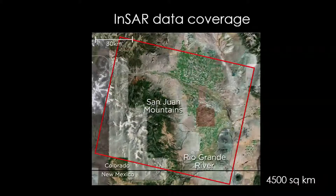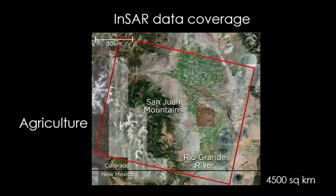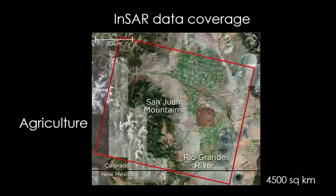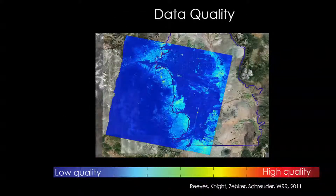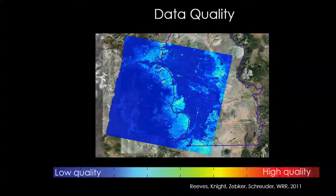So we immediately wanted to use INSAR in the San Luis Valley. This is the data coverage we had — good coverage over the San Luis Valley. But we had a challenge, and this is the reason people haven't previously used this technology in agricultural areas. The challenge was the crops that were growing. Here we are trying to detect this subtle change in deformation, and you have crops growing. Well, this was the topic of Jessica Reeve's PhD thesis, and this was one of the first images she had. This is data quality — blue is bad. This is not a great way to start your PhD thesis.